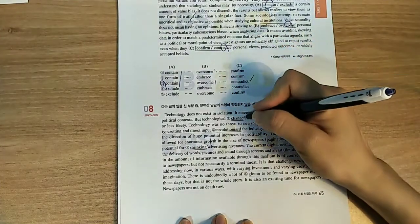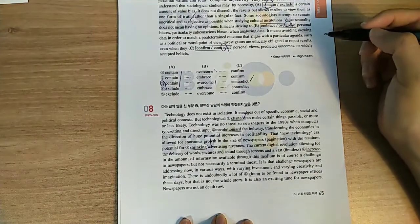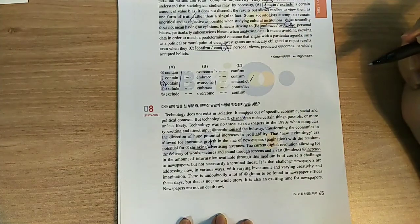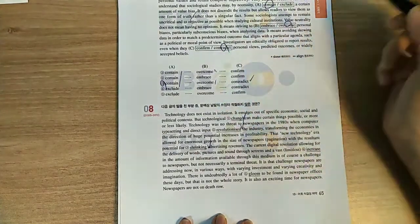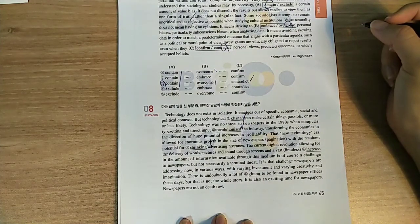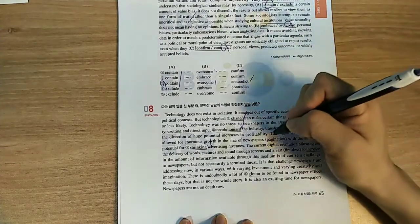So, technological change can make certain things possible, or more or less likely. In the 1980s, when computer typesetting and direct input revolutionized the industry, the new technology era allowed for enormous growth in the size of newspapers' pagination. 이건 무슨 뜻인지 모르겠어. Pagination.